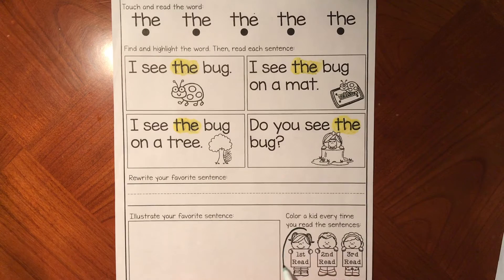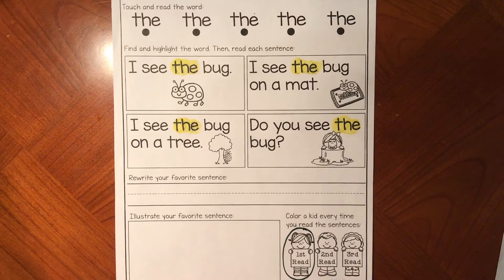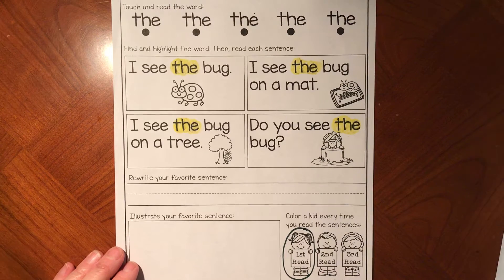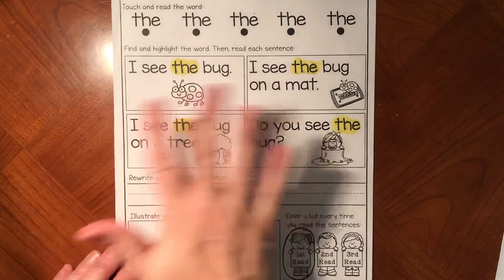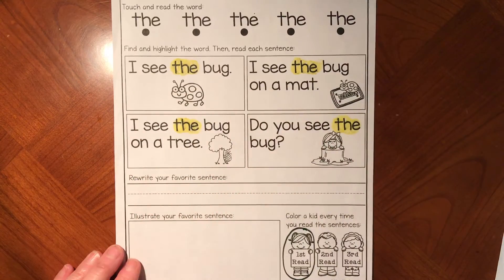That was the first time we read it, so let's circle our first read. If you want to color, you can, but I'm going to circle for time's sake. Alright, second time now — it'll be a little easier. We're familiar with the text; that means we know the words a little more.